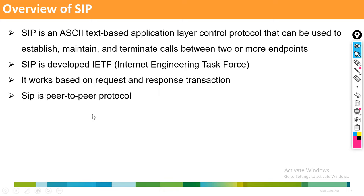SIP is a peer-to-peer protocol, whereas MGCP is a client-server protocol. In MGCP, CUCM is always the server and the gateway is the client — the gateway depends on the call manager. In SIP, it's peer-to-peer: both CUCM and the gateway have separate, independent configurations.